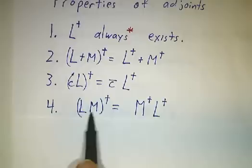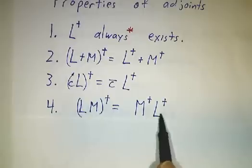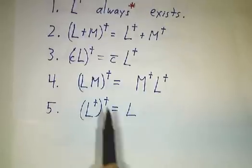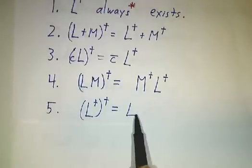The adjoint of a product of operators is the product of the adjoints in the opposite order. And finally, the adjoint of the adjoint is the operator itself.